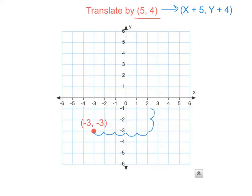I add 1, 2, 3, 4 to my y. And my new point is going to be at 2, 1. It's 2 units over and 1 unit up.